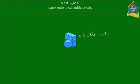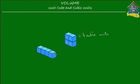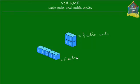Now let's make another solid using maybe a different number of unit cubes — let's say one, two, three, four, and five. Now this solid over here is made of five unit cubes: one, two, three, four, and five.